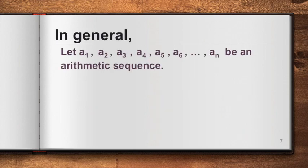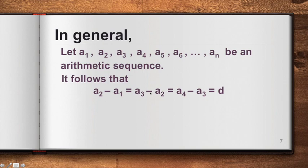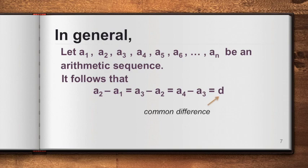In general, let a1, a2, a3, a4, a5, a6, up to a sub n be an arithmetic sequence. It follows that a2 minus a1 must equal a3 minus a2, must equal a4 minus a3, and so on. That value is equal to d, our common difference. This is the way to test if a sequence is arithmetic.